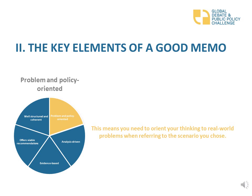What are the key elements of a good policy memo? First, your policy memo needs to be policy and problem-oriented. This means you need to orient your thinking to real-world problems when referring to the scenario you choose. And when choosing your scenario, don't just opt for the most feasible one to write about. This is your chance to take part in writing about something you care for, so write about the scenario that excites you the most.